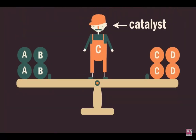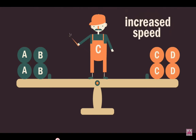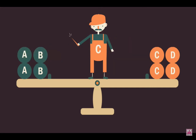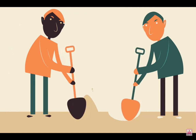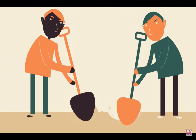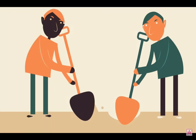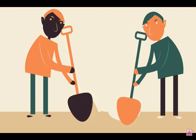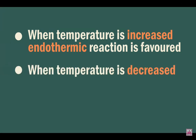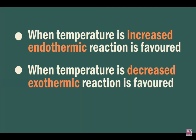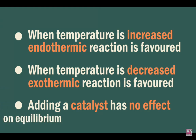Adding a catalyst does not affect the position of equilibrium — it increases the rate of both forward and reverse reactions equally, only quickening the attainment of equilibrium. Think of both you and your friend getting larger shovels: the size of the hole stays constant, but more soil is moved per dig. In conclusion, increasing temperature favors the endothermic reaction; decreasing temperature favors the exothermic reaction. A catalyst has no effect on the position of equilibrium.